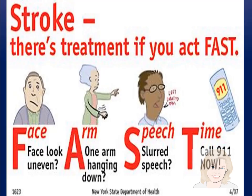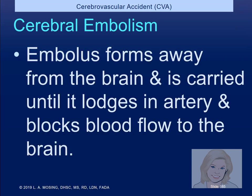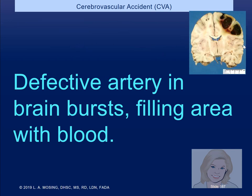Signs of a stroke: when the face looks uneven, an arm starts hanging, speech is slurred — get help. The earlier you have intervention, the better the results. Cerebral embolism forms away from the brain and is carried until it lodges in an artery, blocking blood flow. A hemorrhagic stroke is when the blood vessel bursts in the brain and blood leaks into the space between the skull and the brain — requiring shunting of the extra blood.